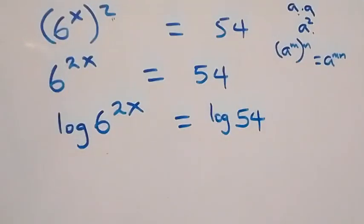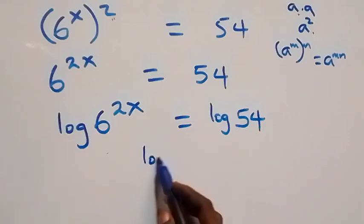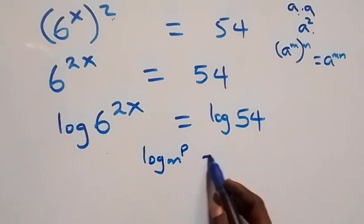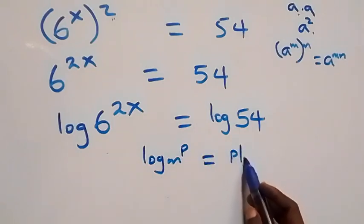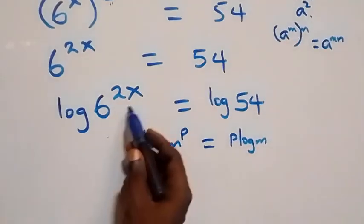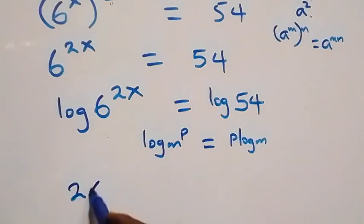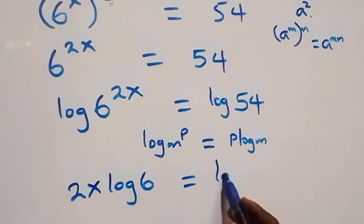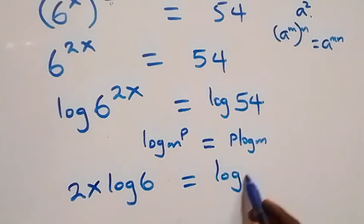Next, we apply the power rule of logarithms. When we have log of m raised to power p, this is the same thing as p times log m. The power here is 2x, so we have 2x times log 6 equals to log 54.